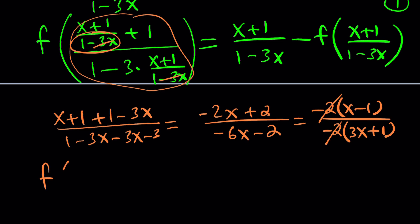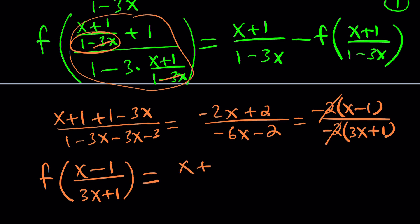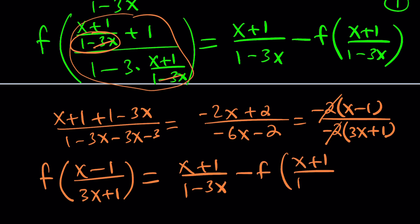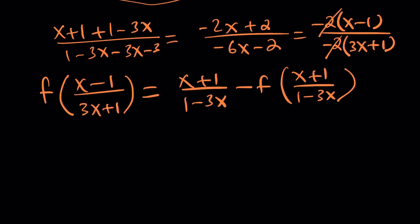Here's what we get from the first equation in simplest form: f of x minus 1 divided by 3x plus 1 equals x plus 1 divided by 1 minus 3x, minus f of x plus 1 divided by 1 minus 3x. This is our first equation.